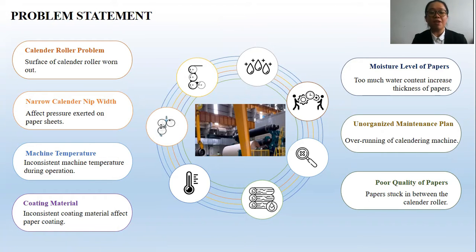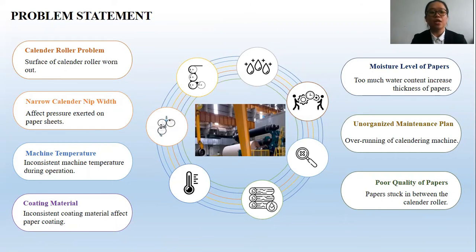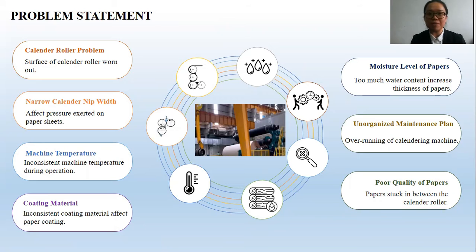There are seven problems found in the paper manufacturing industry, especially in the failure of the calendering machine. First, calendar roller problem — the surface of the calendar roller is normally worn out, causing machine failure. Second, narrow calendar nip width will affect the pressure exerted on the paper sheet. Third, inconsistent machine temperature during operation will also affect the internal condition of the machine. Fourth, inconsistent coating material will affect the paper coating process. Fifth, excessive moisture level causes increased paper thickness. Sixth, unorganized maintenance plans lead to overrunning of the machine. Lastly, poor paper quality is found when paper gets stuck between the calendar rollers.